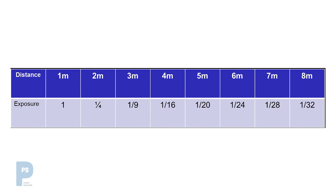From one metre you go to a quarter, then a ninth, a sixteenth, a twentieth, a twenty-fourth, a twenty-eighth, and a thirty-second of the original light. In practice, the difference between one metre and two metres is really significant. If you're lighting a large scene with something very close to the light and something at double the distance behind it, the difference in exposure is going to be very significant — two stops difference between something at one metre and two metres from your light source.